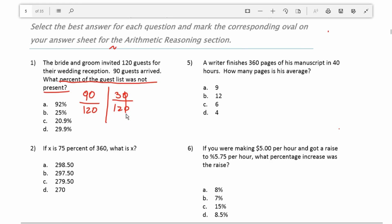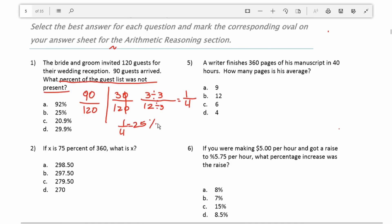The first thing I'm going to do is kick off these zeros to make it 3 over 12. Then I'm going to reduce this fraction further by dividing top and bottom by a common factor of 3. 3 goes into 3 one time, and 12 divided by 3 is 4. We all know 1 fourth is the same as 25 percent. So the answer in this case is B.